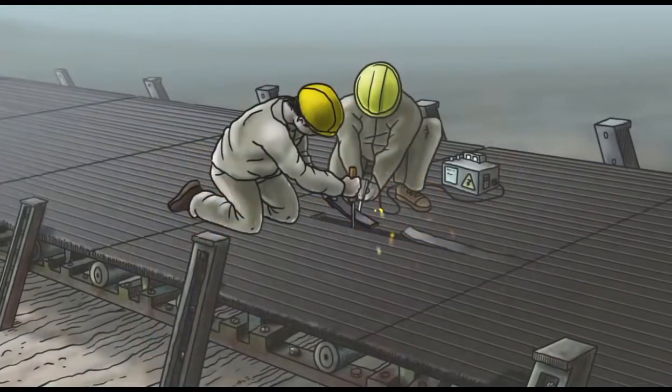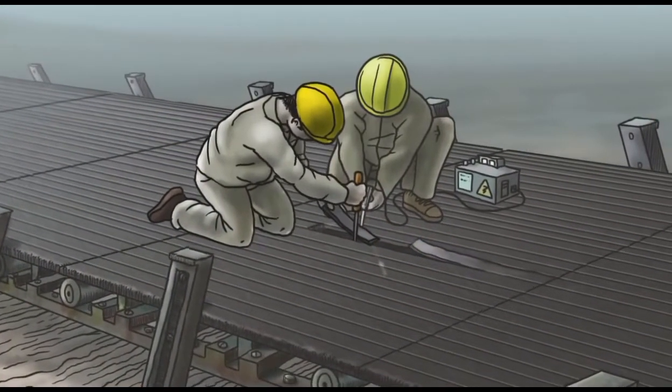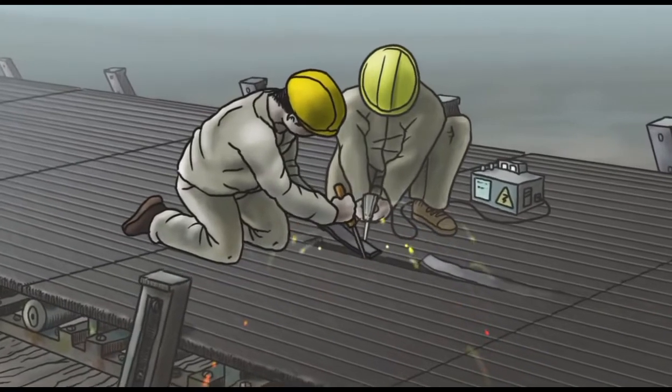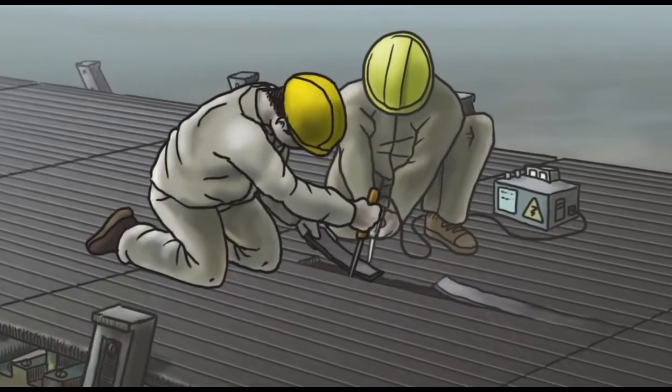When at some point a conveyor belt tears, the welders are called in. They join additional pieces onto the conveyor belt to make it operate again.